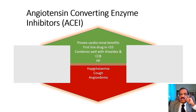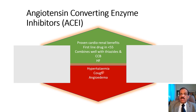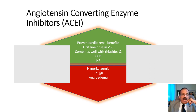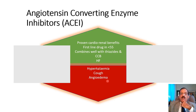If cough develops and there is no other cause, then of course we need to withdraw the medicine. This is a class effect — if somebody develops cough with one ACE inhibitor, they will likely develop it with others too. Angioedema is a potentially serious complication; it may cause swelling of the face and respiratory distress. Patients who develop angioedema due to bradykinin should have the drug immediately withdrawn, and it should be noted in their file that this entire class of drug should never be given again.